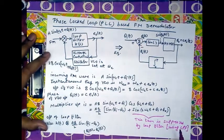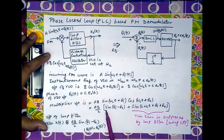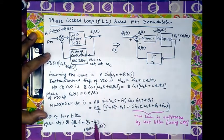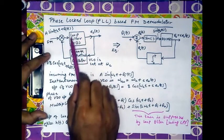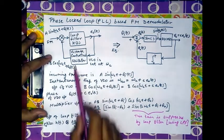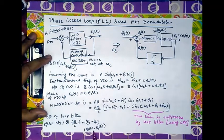The loop filter has low pass filter characteristics, so the high frequency term is suppressed and only the low frequency term passes. The output of the loop filter is e_0(t), which equals the transfer function h(t) convolved with (AB/2)·sin(θ_i(t) − θ_0(t)).